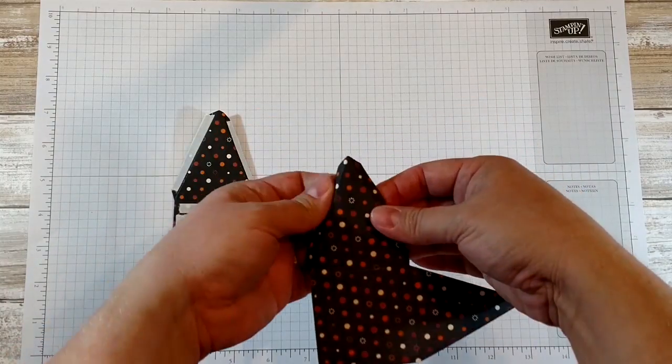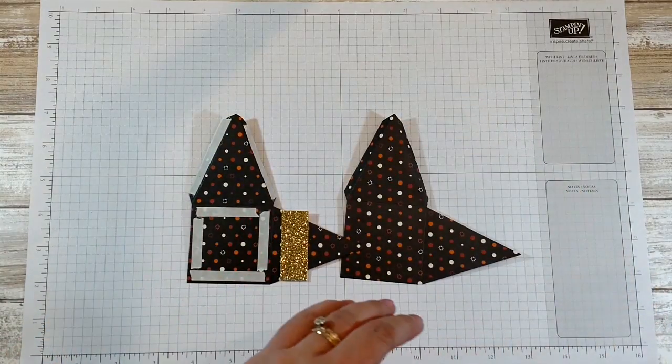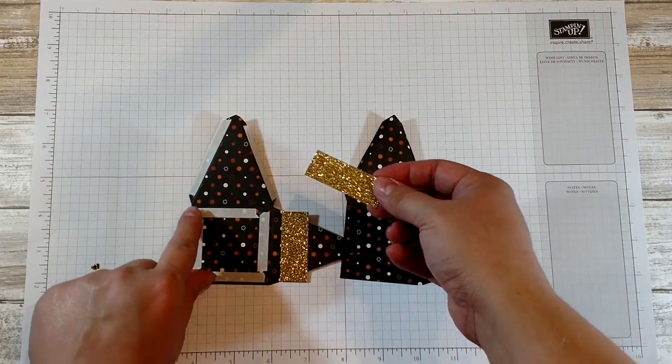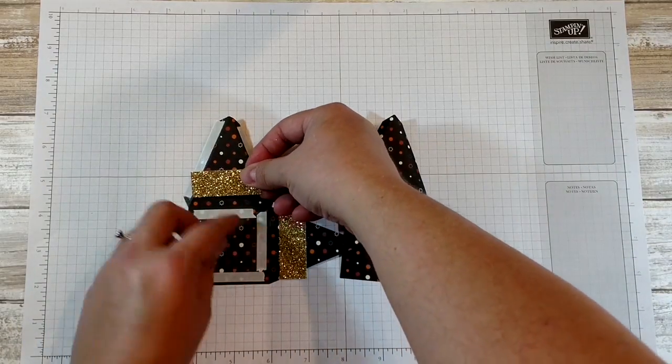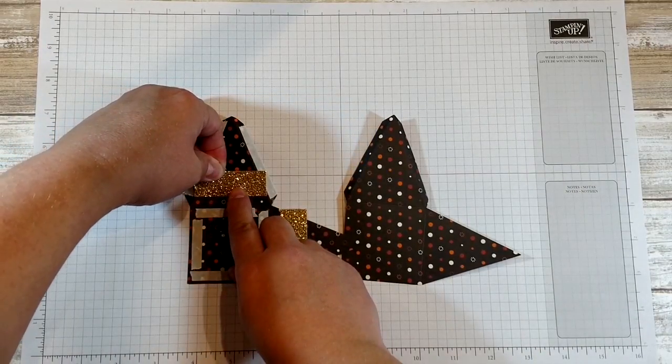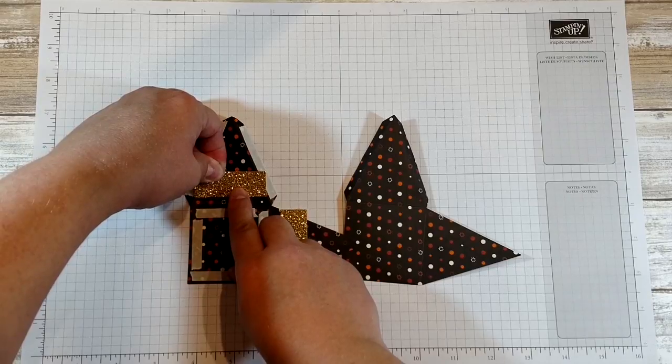Now that they're folded I'm going to take another piece of the glitter paper and I'm going to line the bottom corners with the score lines and the ones with the triangles or the tabs. So you can see the score lines a little better with the fold.